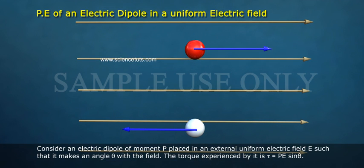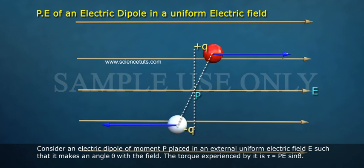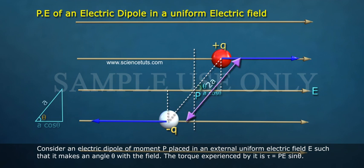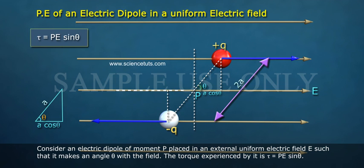Consider an electric dipole of moment P placed in an external uniform electric field E such that it makes an angle theta with the field. The torque experienced by it is tau equals PE sin theta.